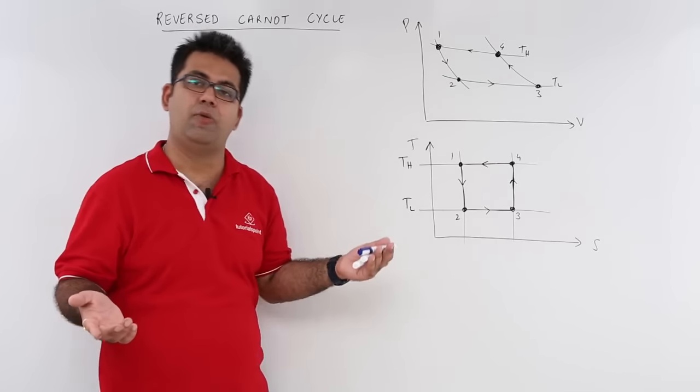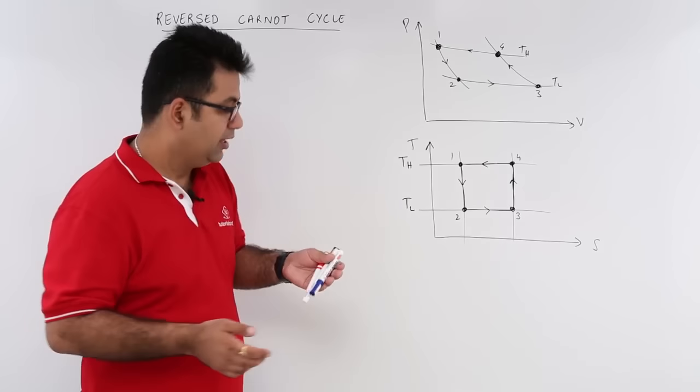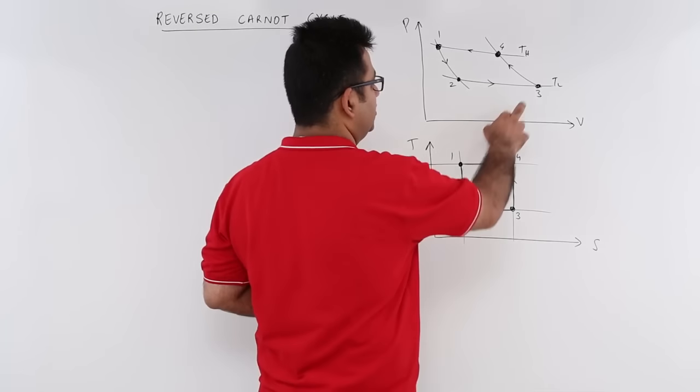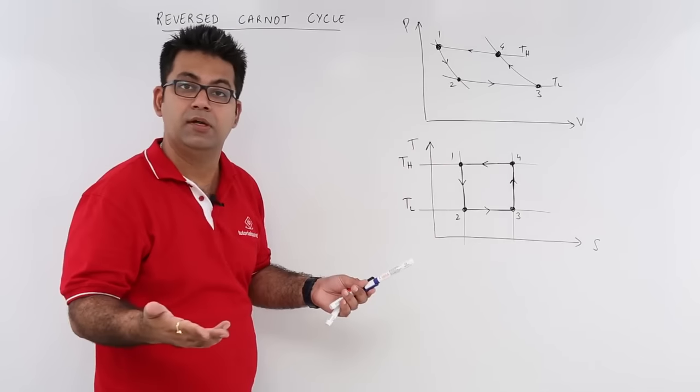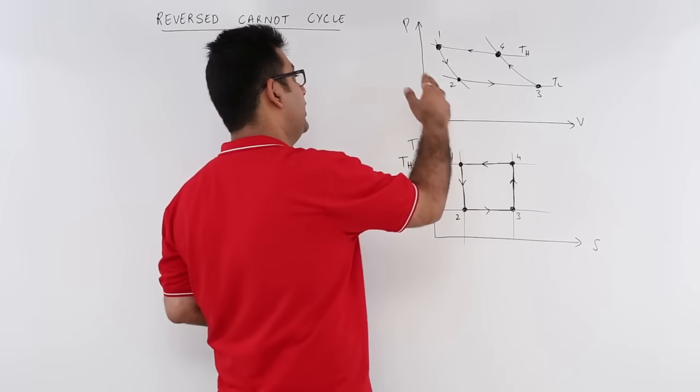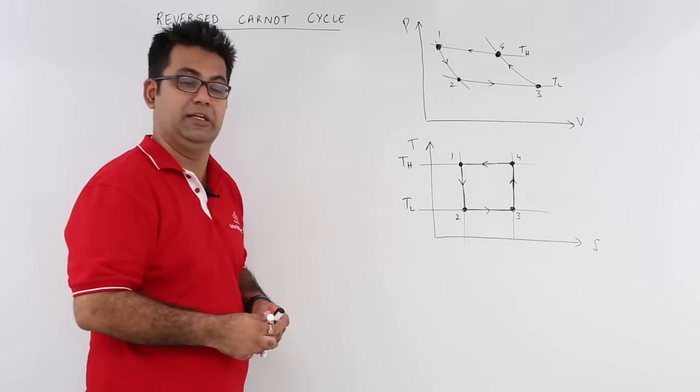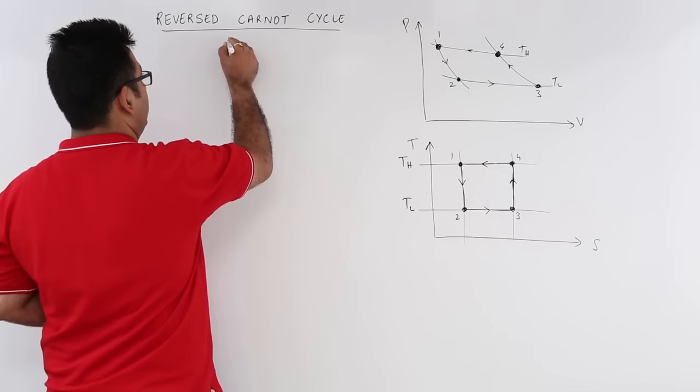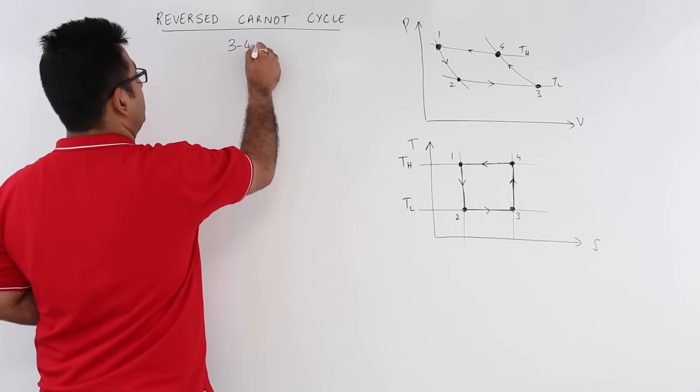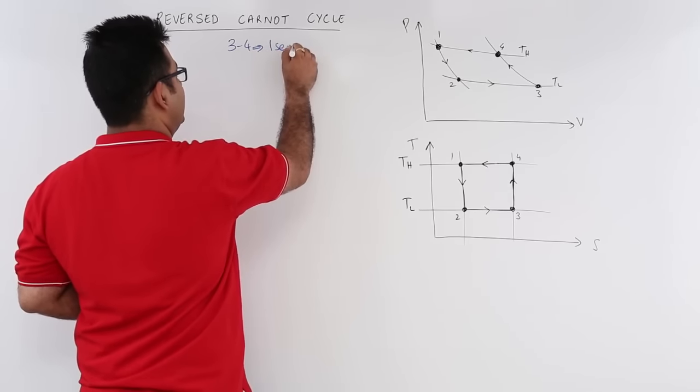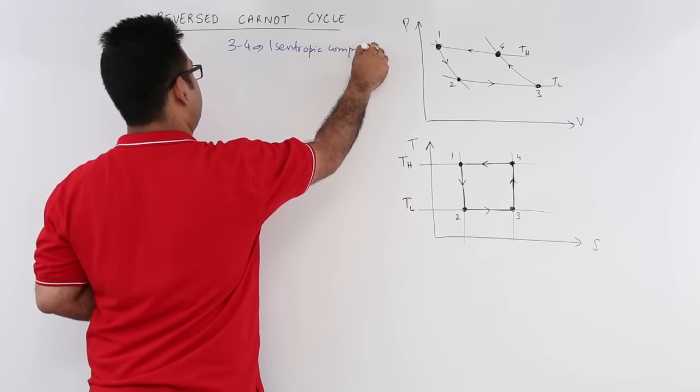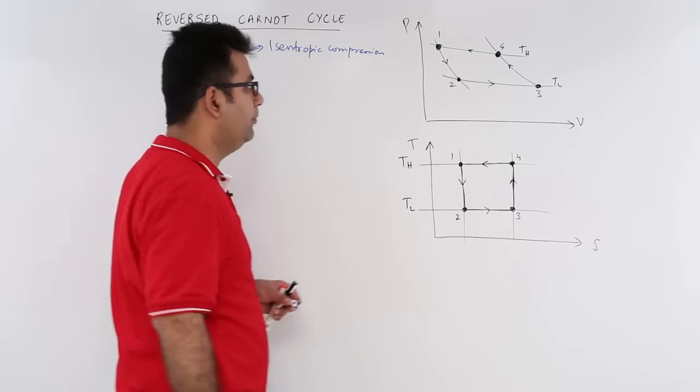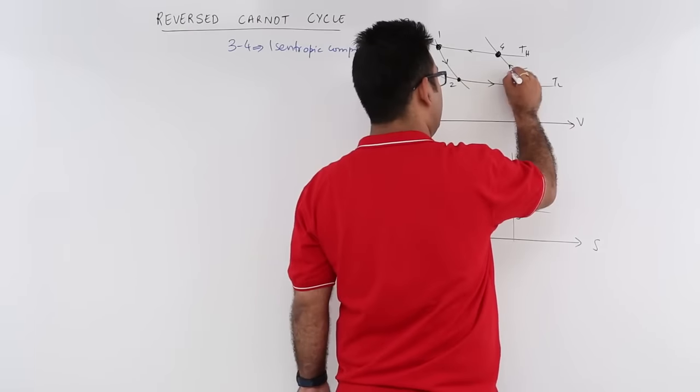Process 3 to 4 is adiabatic or isentropic compression because the pressure is increasing and the volume is decreasing. So 3 to 4 is isentropic compression, and you would be providing some work input during this process.